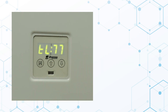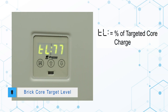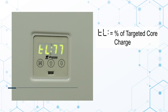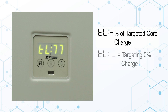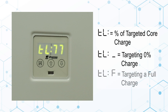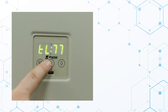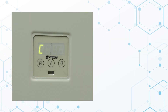Press the up arrow once more, and the display will show TL and a number, indicating the current percentage of brick core charge targeted by the forced air system. TL underscore indicates the system is not targeting any heat in the brick core, and TLF indicates a full core charge target level. Press the up arrow again to return to the normal operating display.